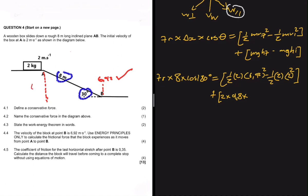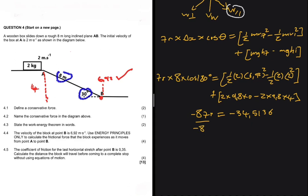The block comes from a height of 4 m down to point B where height is zero, so h_f equals 0 and h_i equals 4. Computing the right-hand side gives minus 34.5136. We then have minus 8 times the frictional force equals minus 34.5136. Dividing both sides by minus 8, the frictional force equals 4.31 N. That completes 4.4.